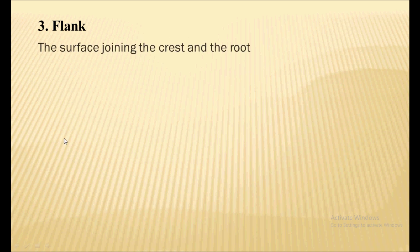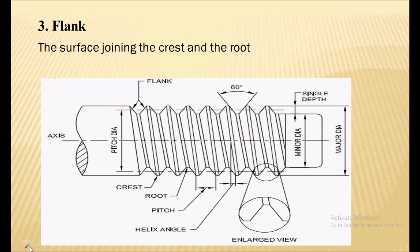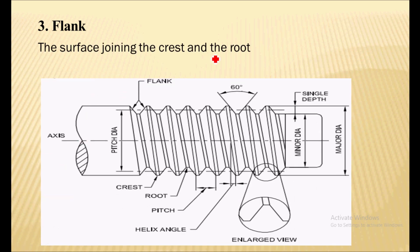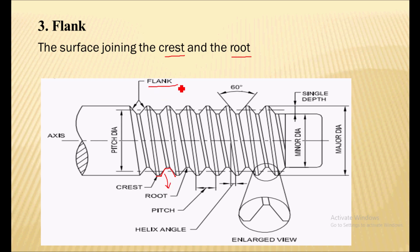Next is the Flank. Flank is the surface joining the Crest and root. This is the Crest and this is the root — the surface which joins these is called as flank, which is also shown over here.